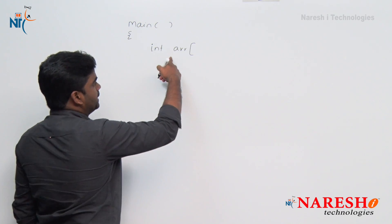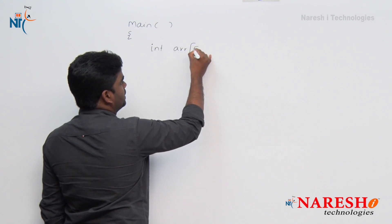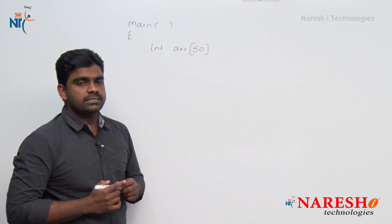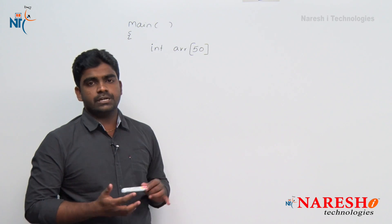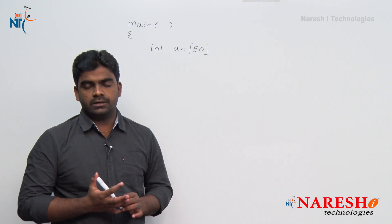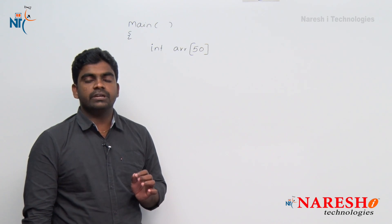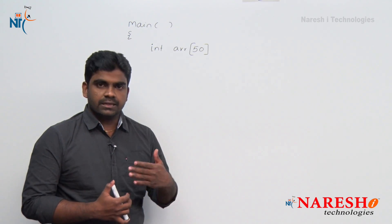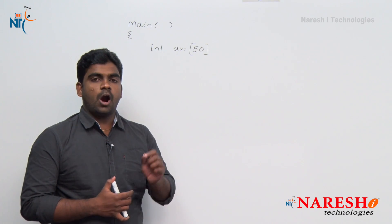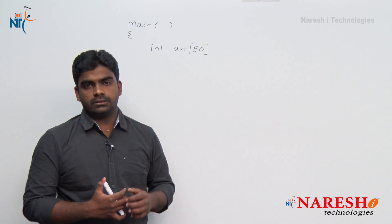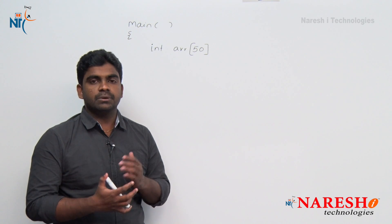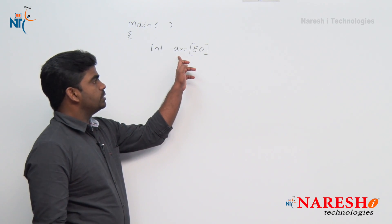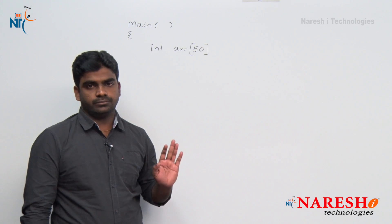But here it is an array, so first declaration is arr[50]. Here we are using 50. Is it necessary to store all 50 elements into the array? No, not required. We just reserve only 50 memory locations. Once again we are asking the end user how many elements you want to work with — the maximum number of elements we can take into this array is 50.